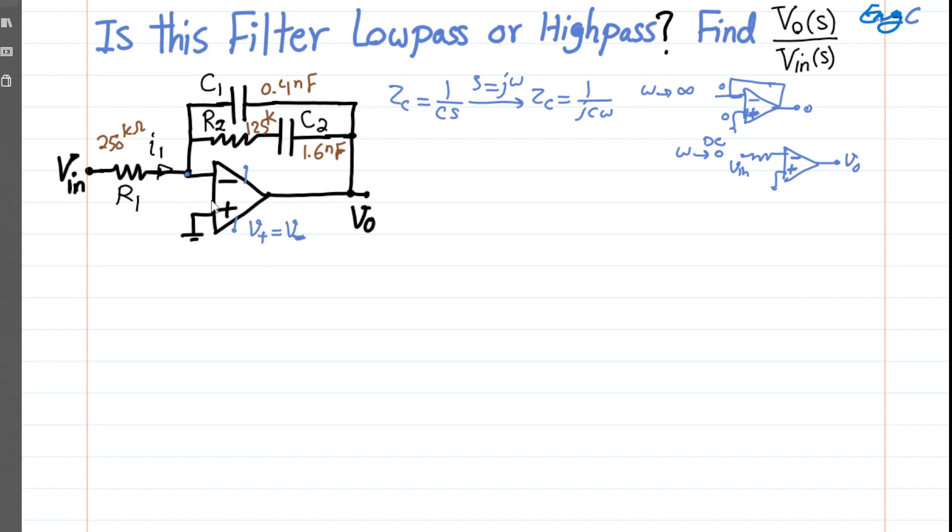Therefore, virtual short, which means V positive equals V negative is valid. Since V positive is zero, V negative is zero as well. As long as the op amp is in linear region of operation, and as you can see, there is a negative feedback loop here, so that's keeping the circuit stable.